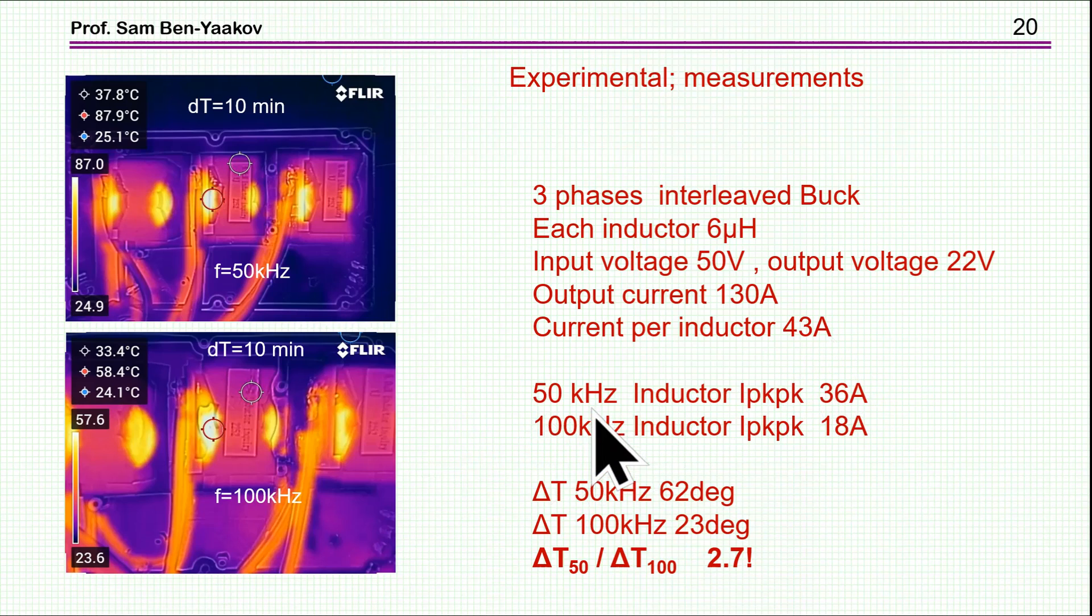And then we have a total output current 130 amps, so the average current for each inductor is 43 amps. Now the ripple for 50 kilohertz and 100 kilohertz are of course a factor of two. 50 kilohertz is 36 amps.